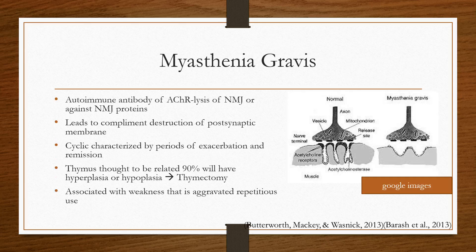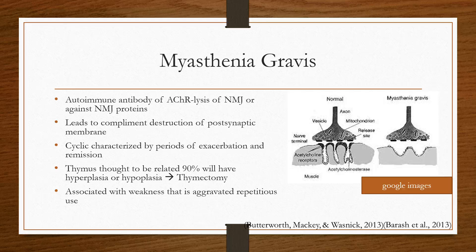Myasthenia gravis is an autoimmune disease where antibody formations target proteins at the neuromuscular junction on the motor end plate. Most patients will have titers for the nicotinic cholinergic receptor, though not every patient will. Ultimately it leads to a destruction of the postsynaptic membrane, so it doesn't matter how many neurotransmitters you send — there's just no one there to receive the message.